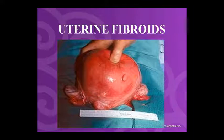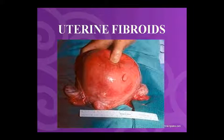Good morning class. This is our new pathology class in which today we will start a new system of pathology — the pathology of the female reproductive tract. Today we will study the first topic of this chapter, which is uterine fibroid.